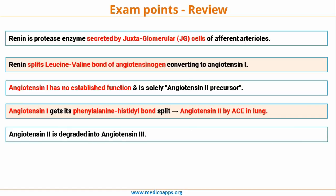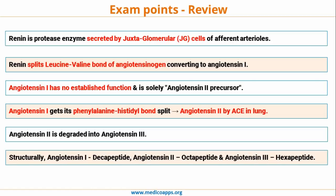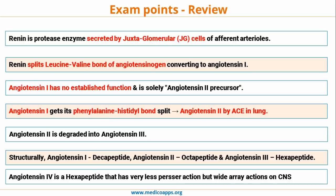Angiotensin 1 gets its phenylalanine-histidine bond split and is converted into angiotensin 2 by ACE in the lung. Angiotensin 2 is then degraded into angiotensin 3. Structurally, angiotensin 1 is a decapeptide, angiotensin 2 is an octapeptide, and angiotensin 3 is a heptapeptide. Angiotensin 4 is a hexapeptide and has very little pressure activity but a wide array of CNS activity, mainly controlling thirst and fluid balance.